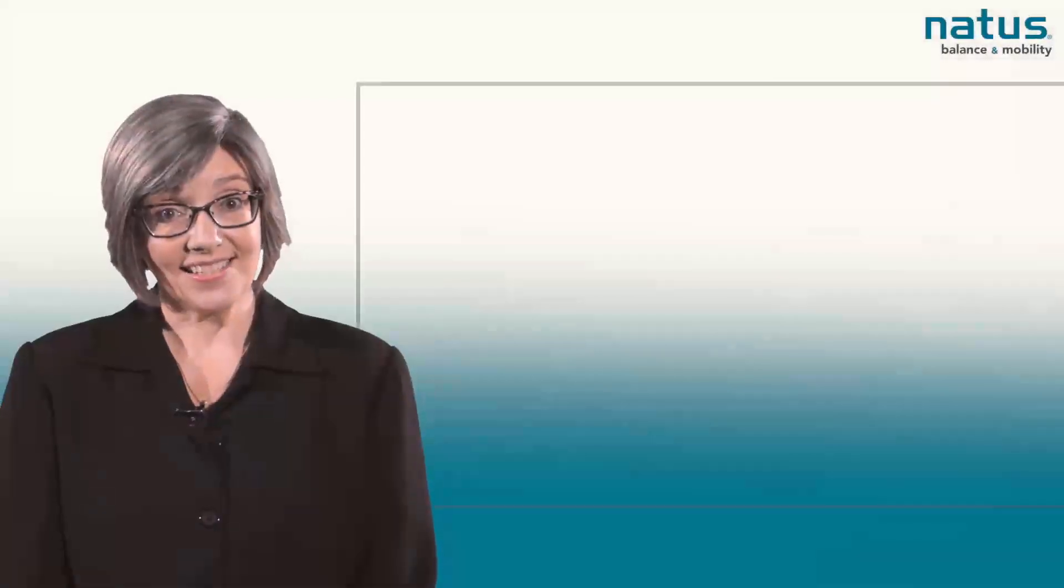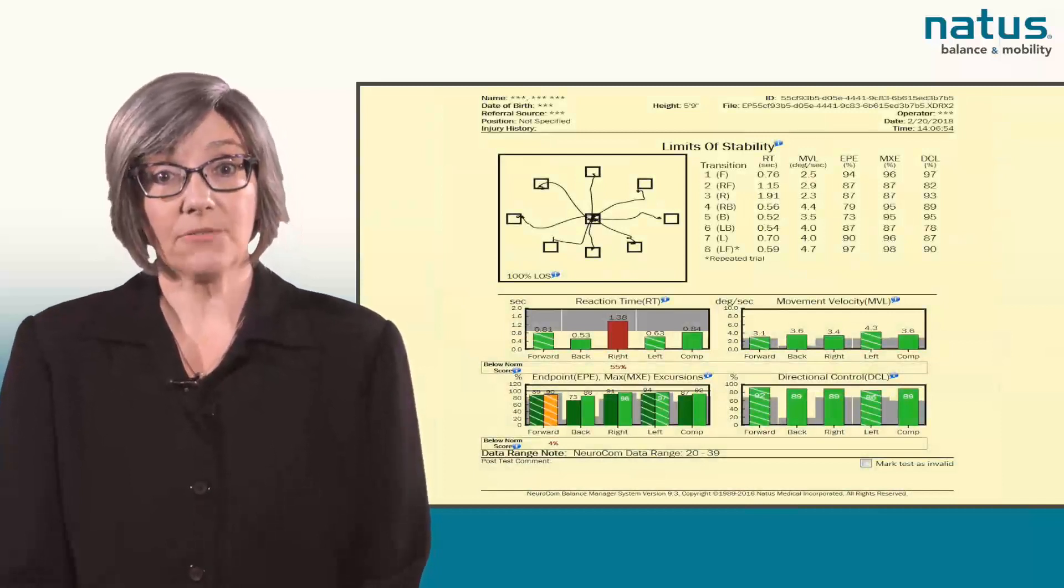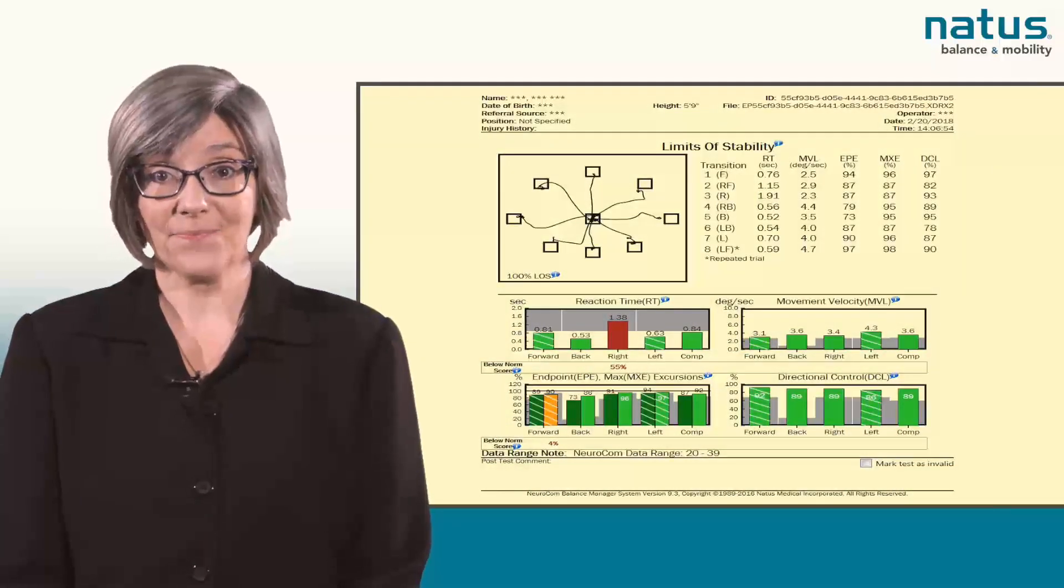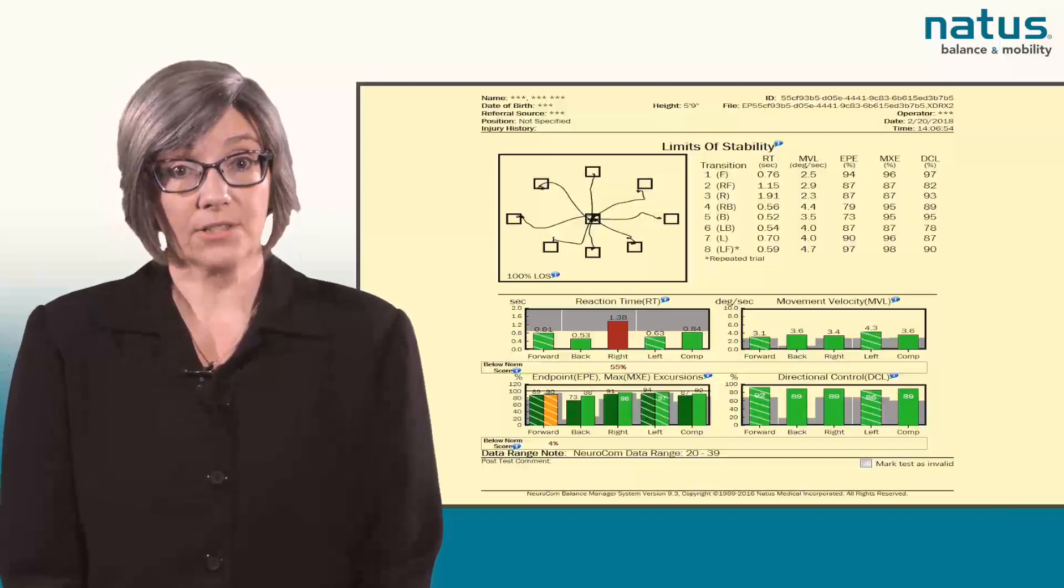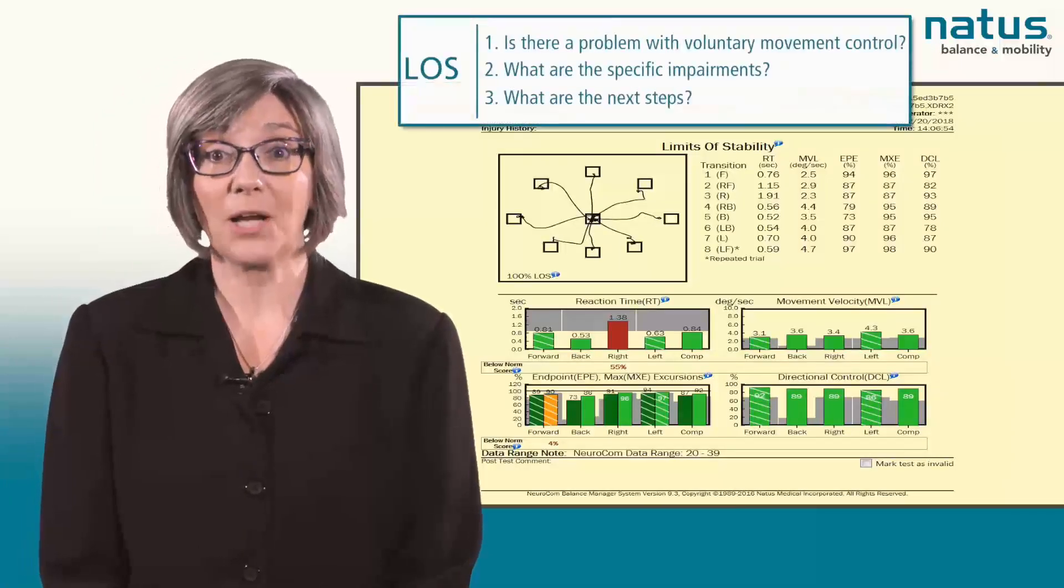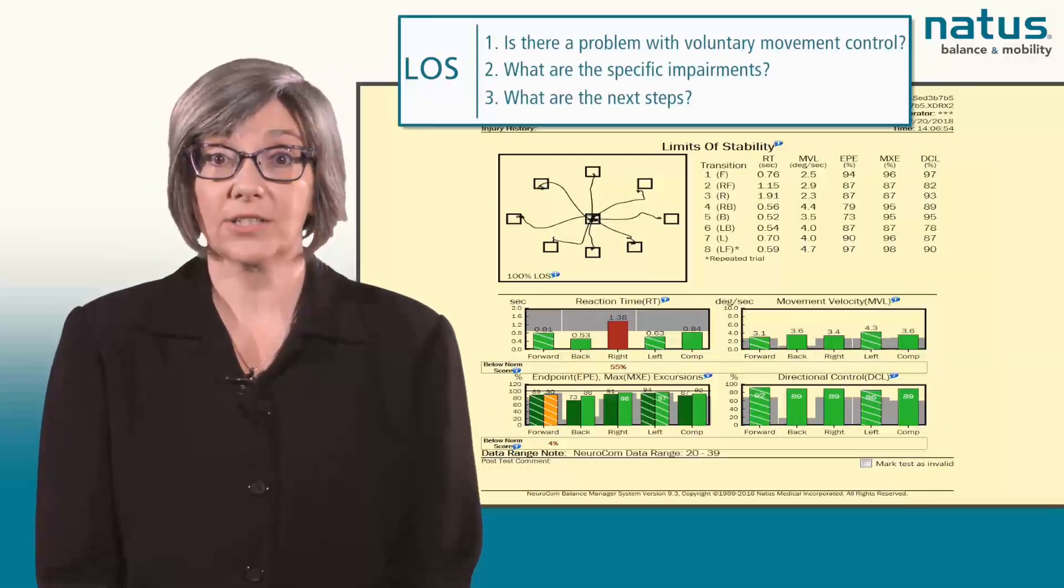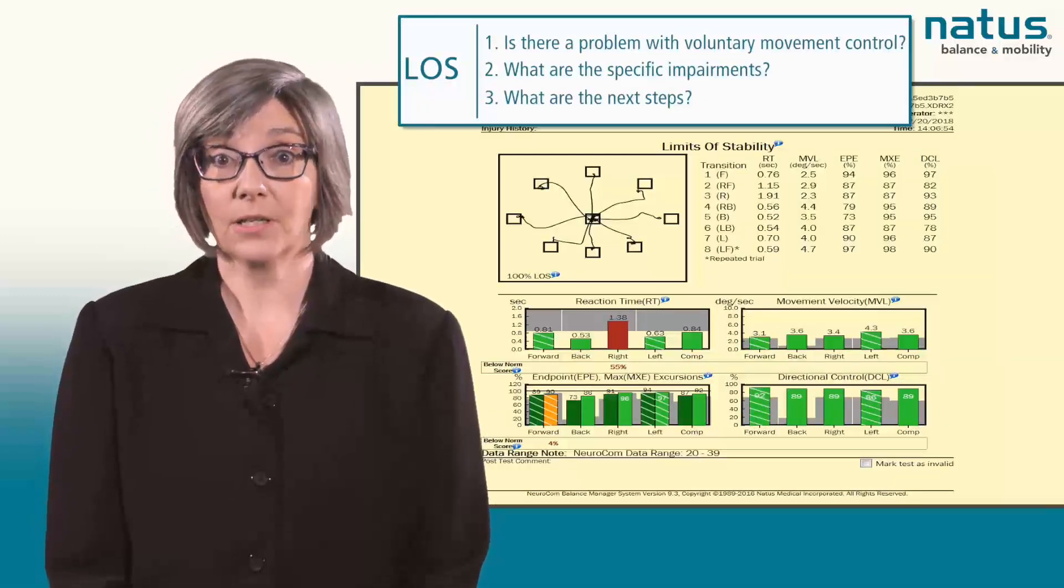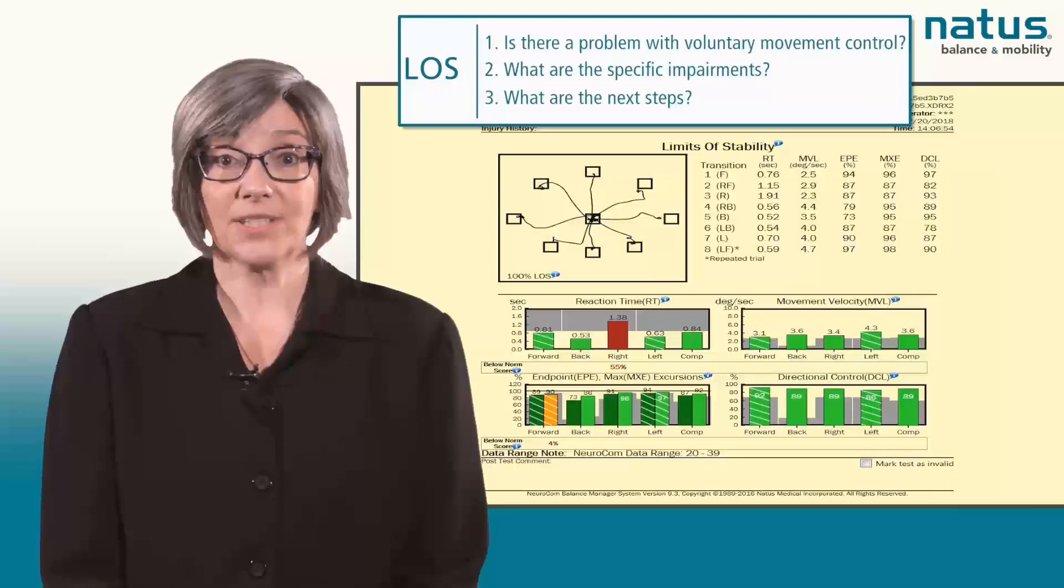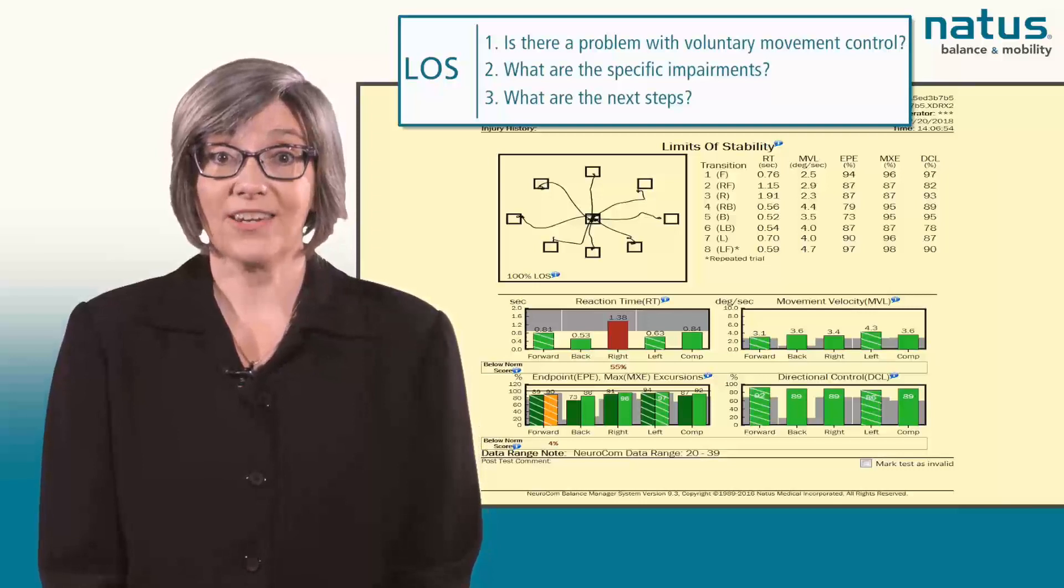Now that the test is complete, it's time to analyze the results. This is an example of the report generated by the system. While reviewing the results of the Limits of Stability test, it is important to keep the following key questions in mind. Number one, is there a problem with voluntary movement control? Number two, what are the specific impairments? And number three, what are the next steps?